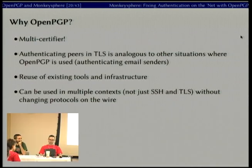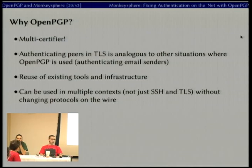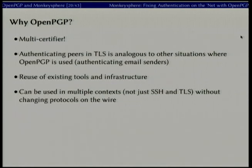Why do we look at OpenPGP? It's multi-certifier. Authenticating things using TLS or X.509 certificates is very analogous to identifying an email address via OpenPGP — these are essentially the same issues. There's an existing infrastructure with multiple implementations. We can also use it in multiple spaces without having to change any of the other protocols we use to communicate. Since we're looking at something out-of-band to certify our assertions, we don't need to change those protocols if we can use OpenPGP for this out-of-band authentication.